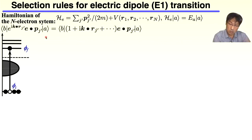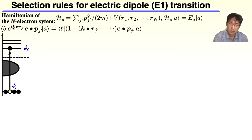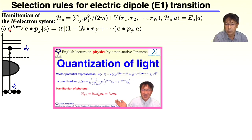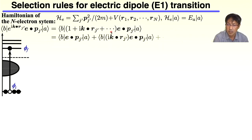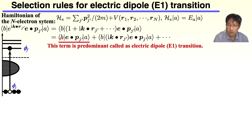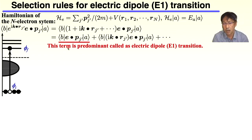Now we consider that only one electron is excited among these electrons. Then, further, we calculate the exponential function. This is in the quantized vector potential, and we expand this exponential function like this. We obtain these terms. This is the first term, and I would like to say that this term is predominant, called the electric dipole transition.